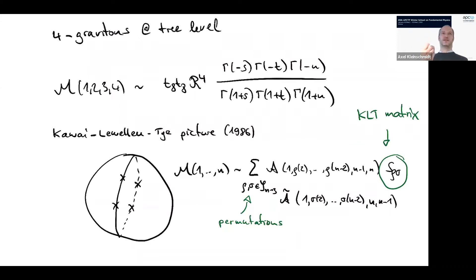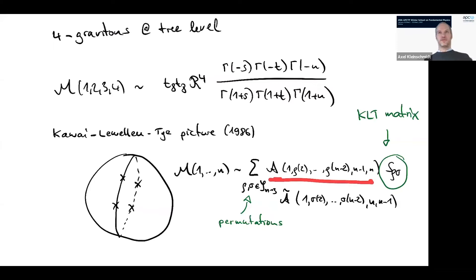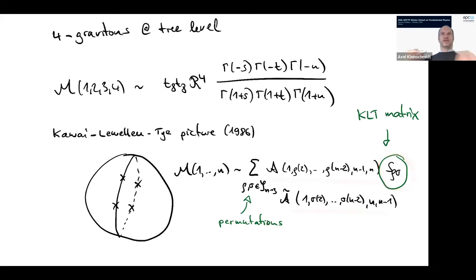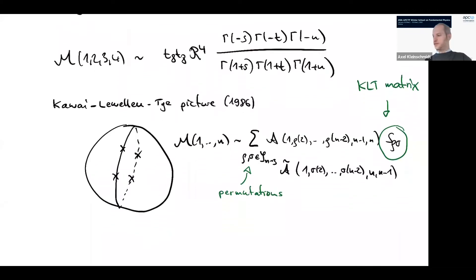Since the operators are on the boundary of the disk and that boundary can be ordered, this picture requires summing over permutations of the ordering of the vertex operators on the boundary. As always with tree-level calculations, since you can fix three points, you only have to sum over permutations of n minus 3 points. You take one permutation on one side and another permutation on the other side, connected by the KLT matrix. This is the rough picture for the relation between open and closed string amplitudes, and now I want to make this formula more concrete.